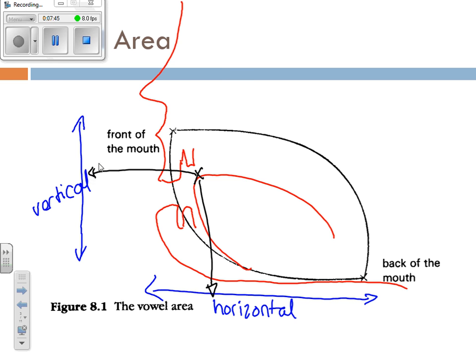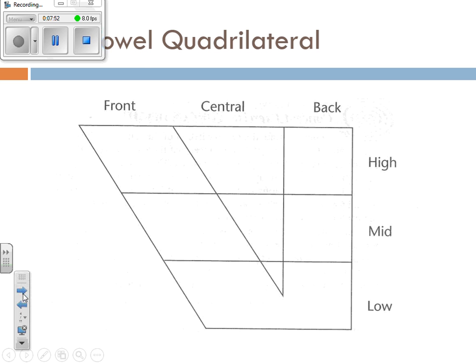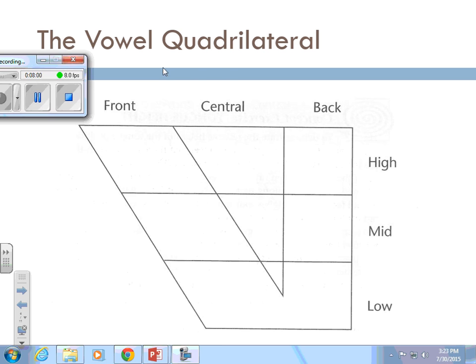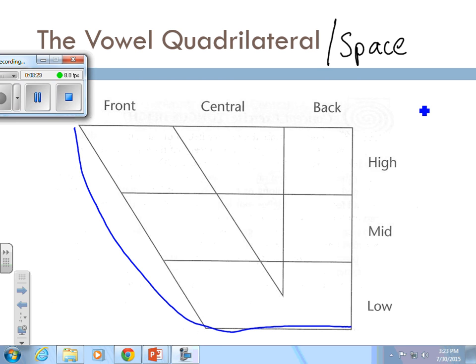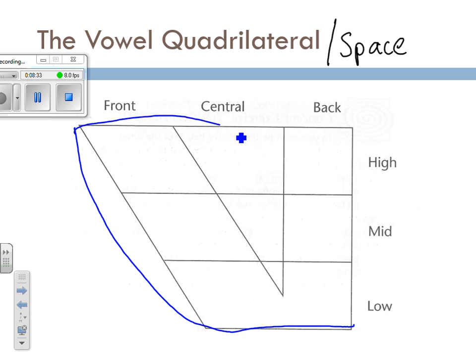What phoneticians have done is taken this idea of a vowel space — you'll often hear this referred to as the vowel space or the vowel quadrilateral — and superimposed it on a different shape called the quadrilateral. It's just a way to divide up that more softly rounded shape into various sectors where we can slot different vowels in.